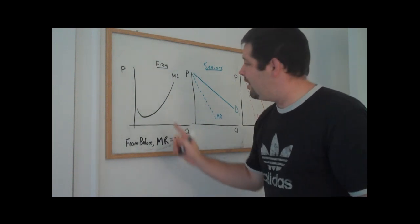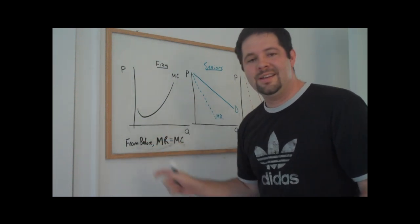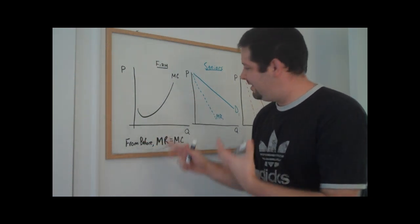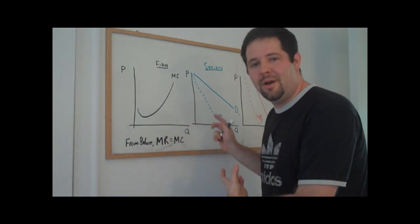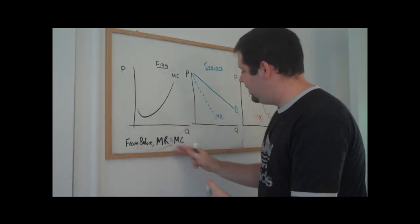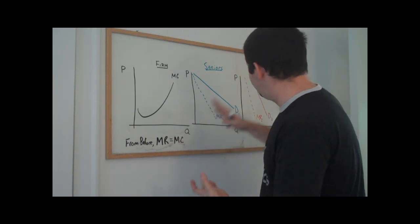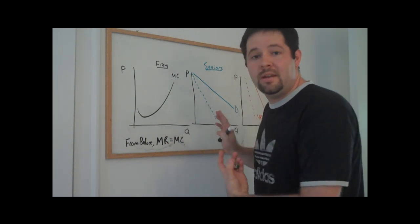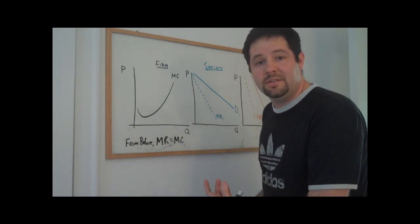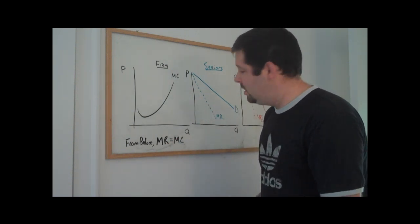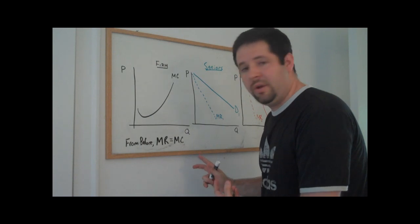The trick is that marginal cost is common across markets, so the marginal revenues will have to be equated across markets as well.